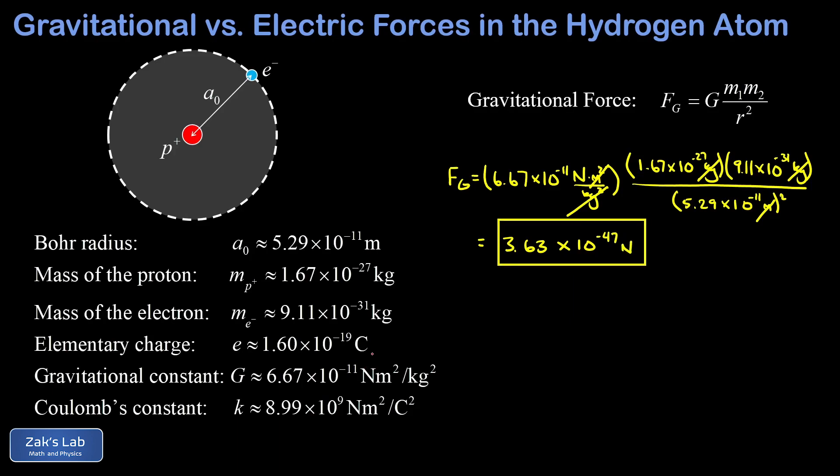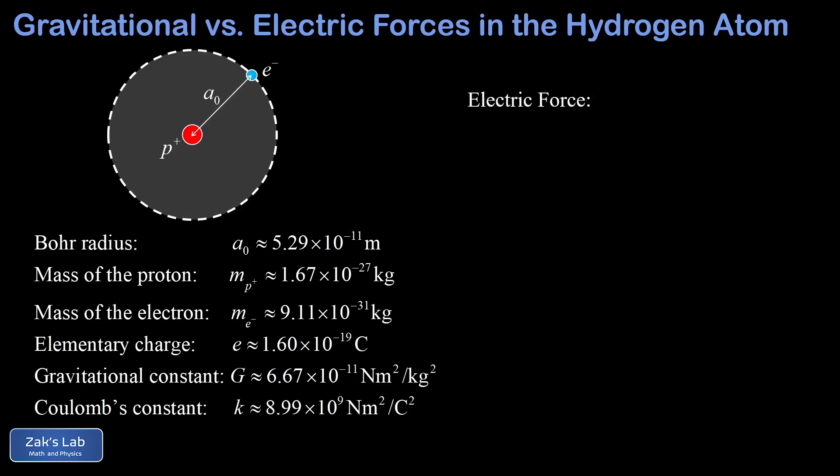Okay, so there's the gravitational force between the proton and the electron. Now let's do the electric force. To get this done, we have to use Coulomb's law. And Coulomb's law says that the electric force is given by kQ1Q2 over r squared, where k is Coulomb's constant, Q1 and Q2 are the two charges that are interacting, and r is the separation distance between them.